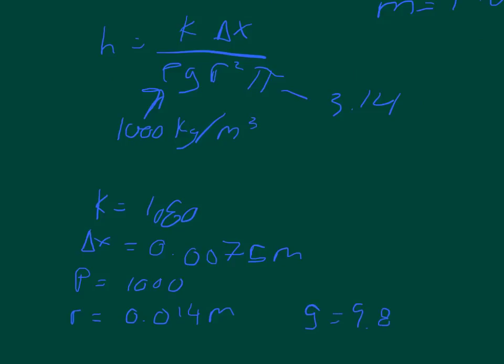Then when you solve this, you plug in all your numbers. So you have 1,000, 9.8, 0.014 squared, 3.14, 0.0075, and 1,080. When you plug all these in your calculator, you should get an answer of 1.34299 meters.